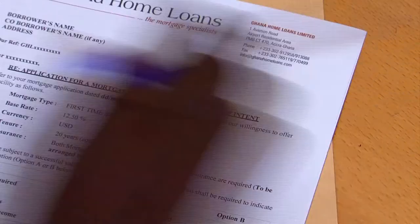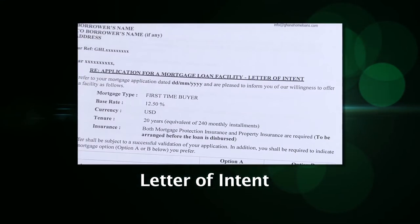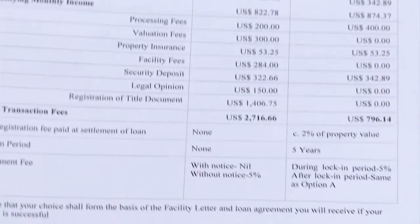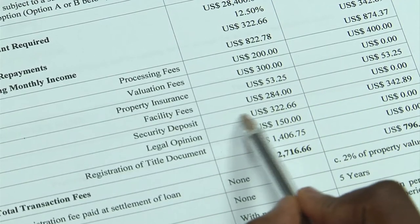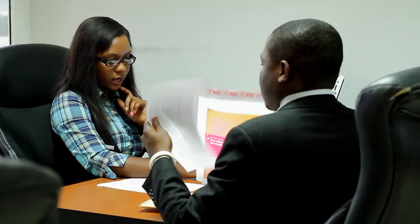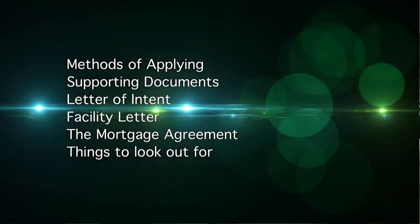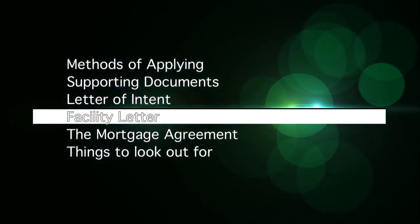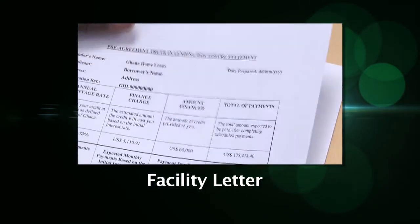Once we receive your completed application with supporting documentation, we shall provide you with a Letter of Intent. This outlines our intention to provide a loan subject to you successfully meeting all other preconditions. The Letter of Intent is not an offer letter and does not commit us to lend to you. You are required to sign and return the Letter of Intent with any additional supporting documentation required. Your application shall then be submitted for credit approval. If successful, you shall receive a facility letter, which is a firm commitment from Ghana Home Loans to provide you with the approved funds, but again subject to preconditions.